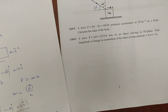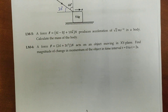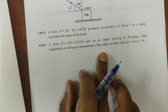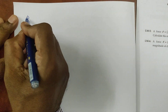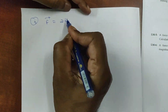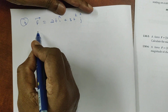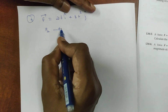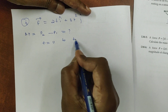This is question number 5 completed. Now question number 6 — the last question of this video. Force is given as F = 2t î + 3t² ĵ. Find the magnitude of the change in momentum from time t = 0 to t = 2 seconds.